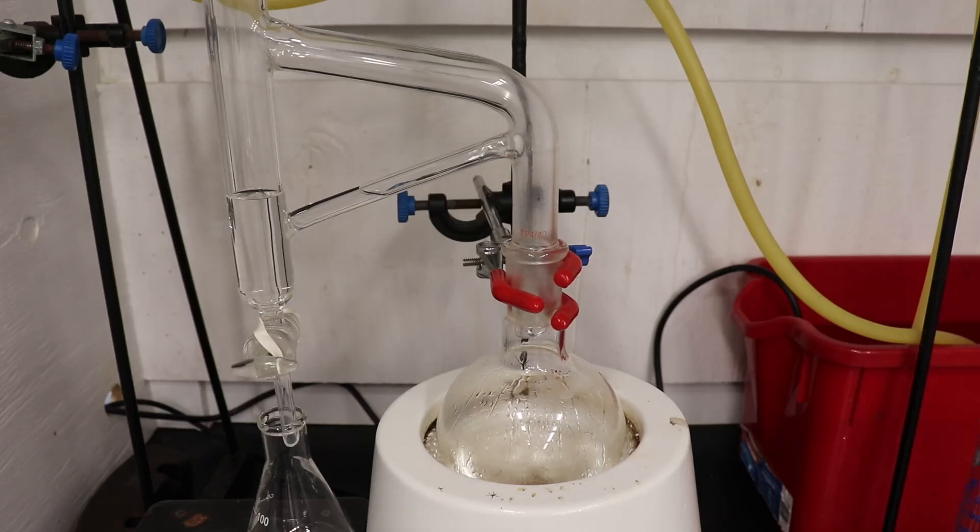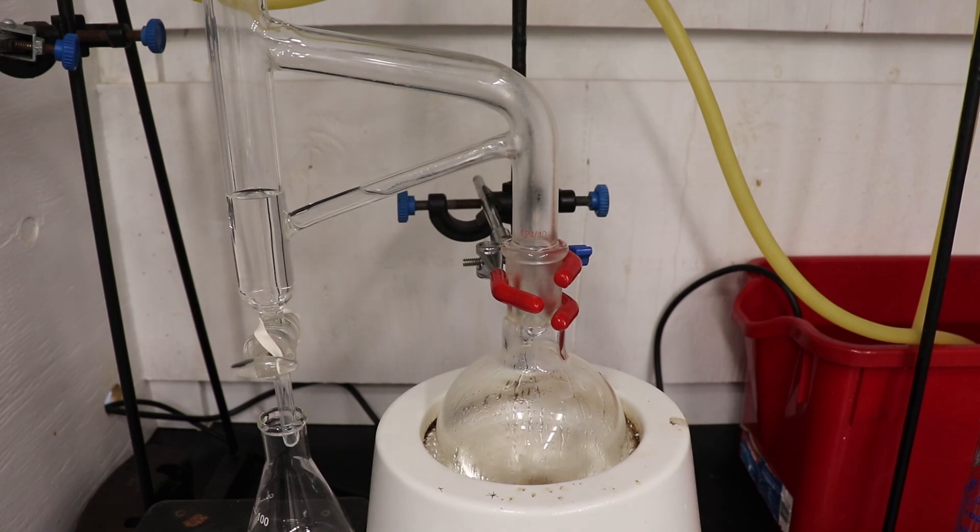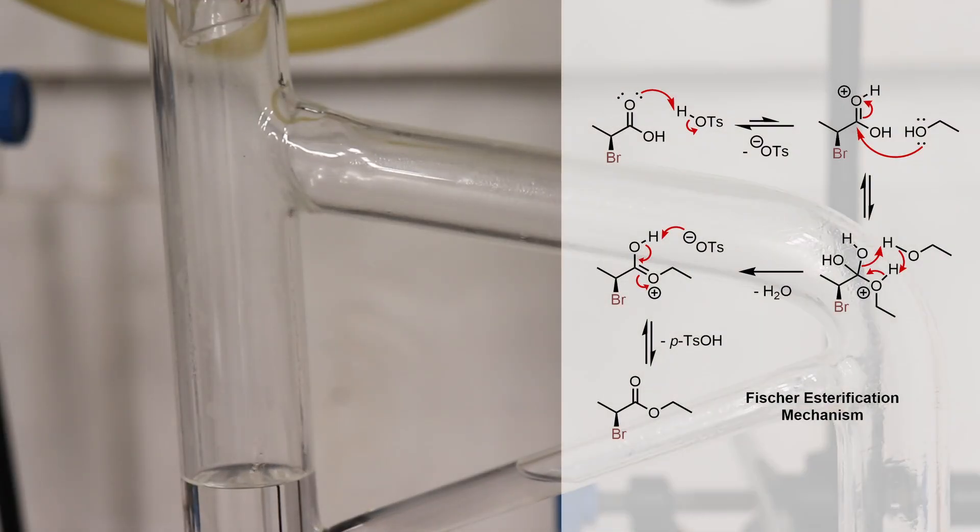After some time, vapors can be seen rising up through the arm of the Dean-Stark apparatus. The purpose of this setup is to separate out the water that is formed during the esterification.